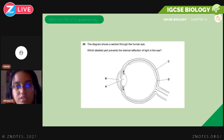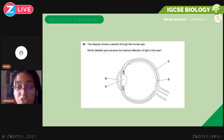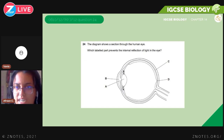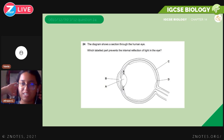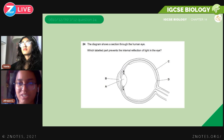The next question is May/June 2012, Question 24. The diagram shows a section through the human eye. The question asks which labeled part prevents the internal reflection of light in the eye — the answer would be the lens, option A. And that's it — that is Chapter 14. Thank you for watching and I hope the video was helpful.